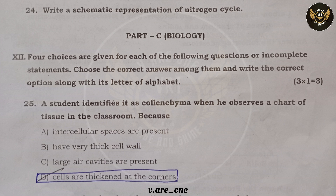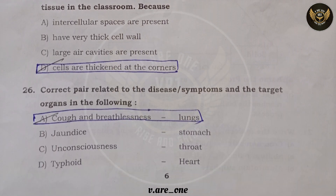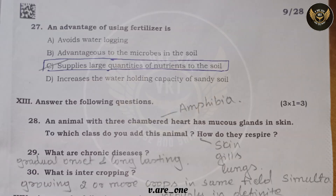Moving to the Biology section. Question twenty-five: a student identifies a tissue as collenchyma because option D — cells are thickened at the corners. Question twenty-six: the correct pair of disease/symptoms and target organs is option A — cough and breathlessness corresponds to lungs. Question twenty-seven: an advantage of using fertilizer is option C — it supplies large quantities of nutrients to the soil.